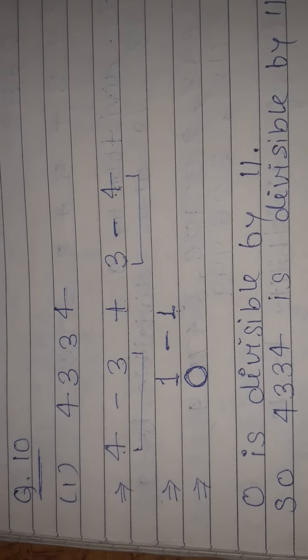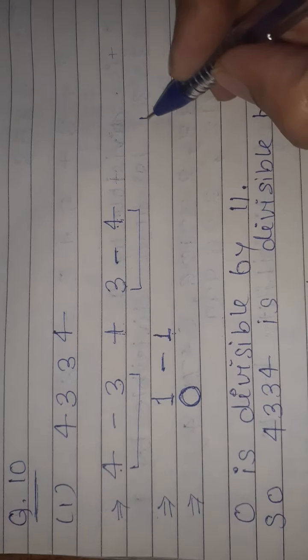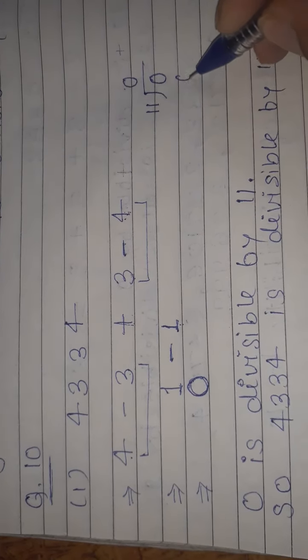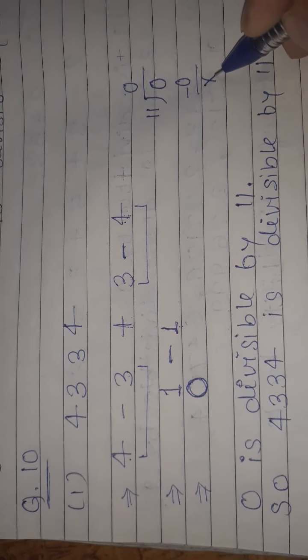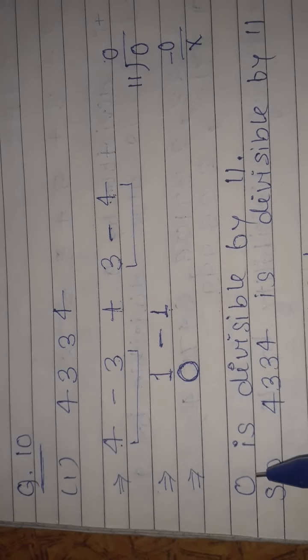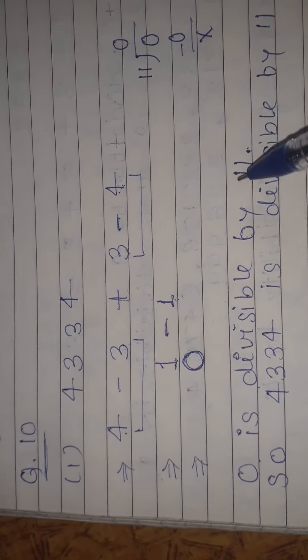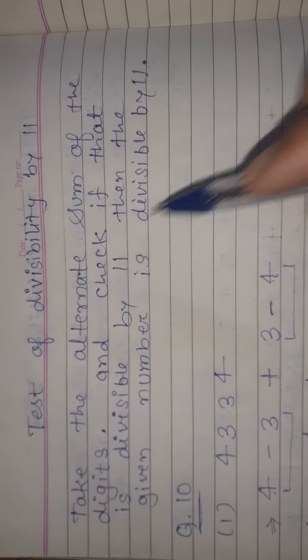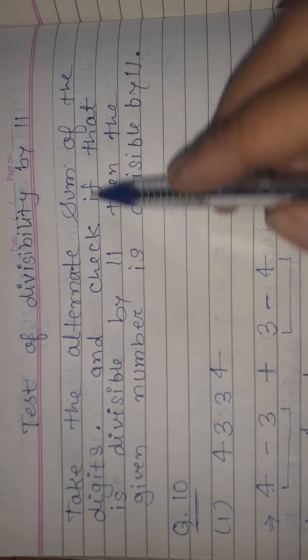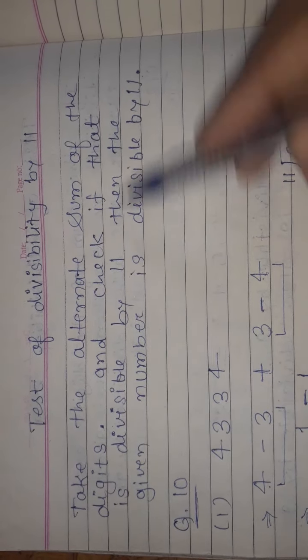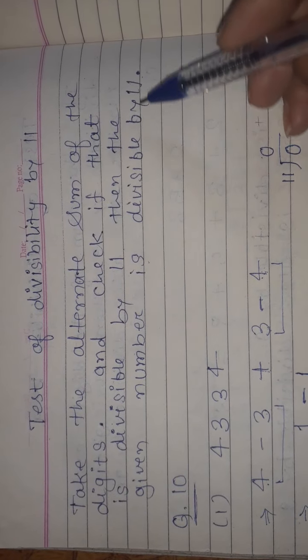Obviously we know that 0 is divisible by 11. In the test we have said: find the alternate sum and check if that is divisible by 11. Then the whole number is divisible by 11.